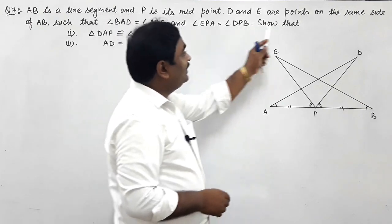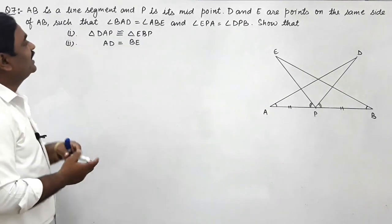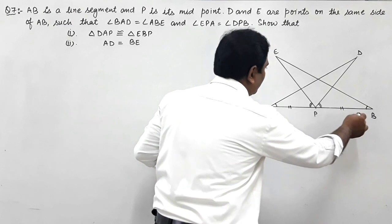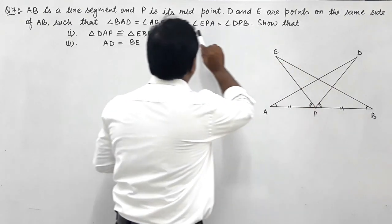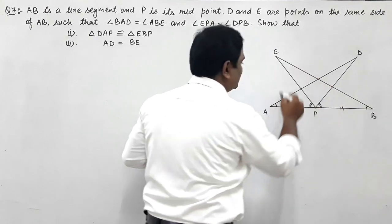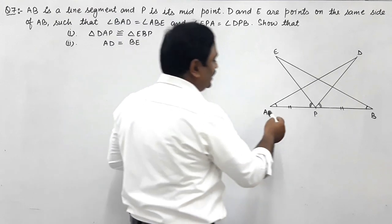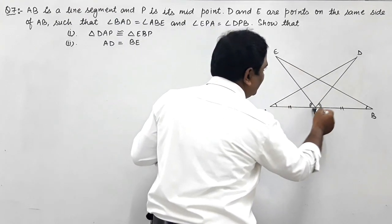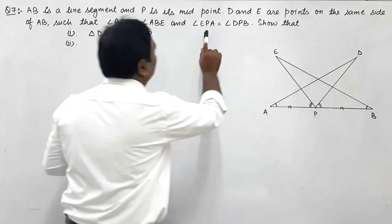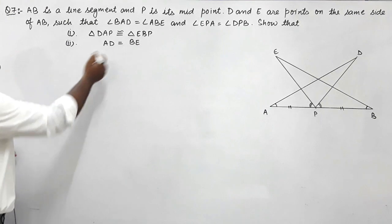D and E are points on the same side of AB such that angle BAD is equal to angle ABE. These two angles are equal, and angle EPA is equal to angle DPB. We need to show that these two triangles are congruent and that AD is equal to BE.